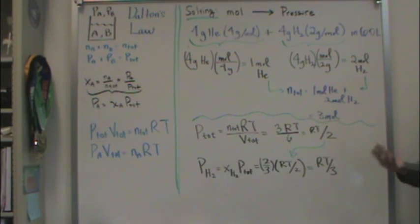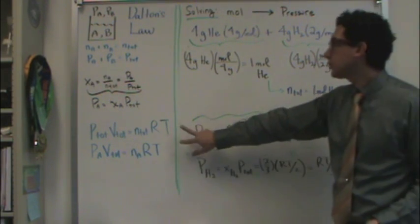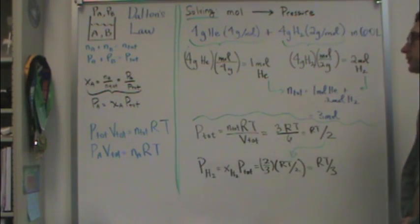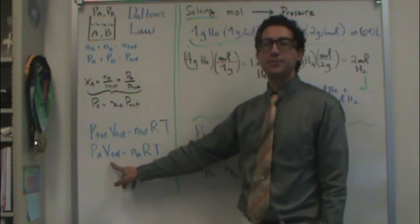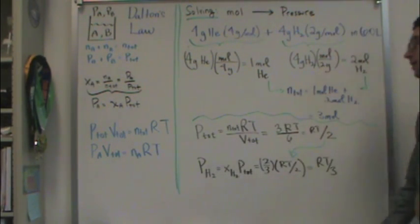Now, also helpful in Dalton's Law sort of problems are often the ideal gas law. And there's two helpful forms that I wrote for you there. P total V total equals N total RT, so really everything is a total. There's no total for the R because it's a constant, and no total for the T because it's just a set temperature. Or you can do it in forms of fractions. The partial pressure of A is V total times the moles of A RT. So you're going to find those could also be helpful formulas.